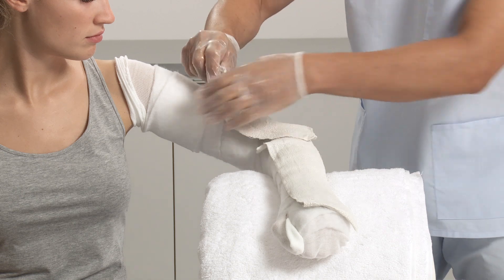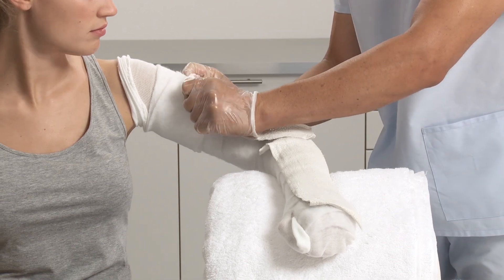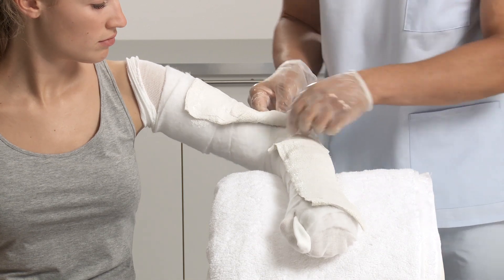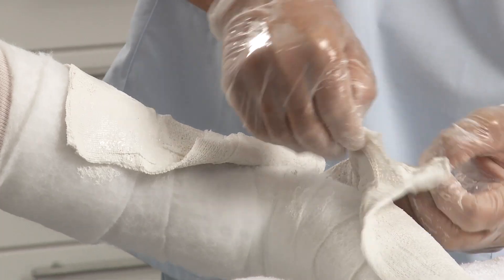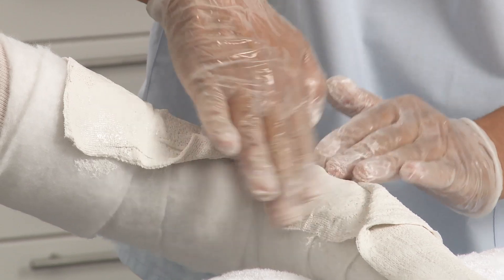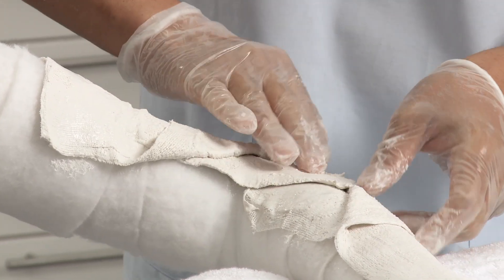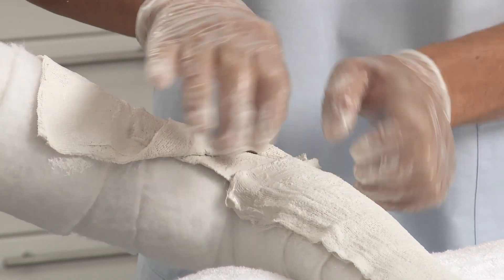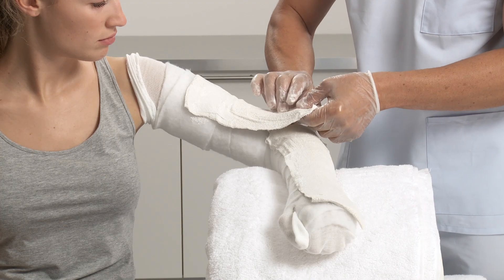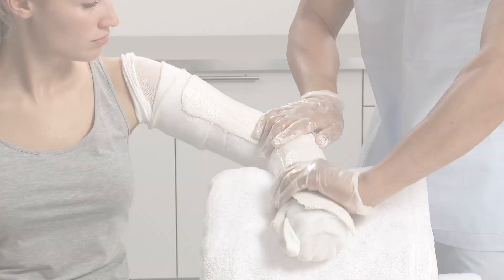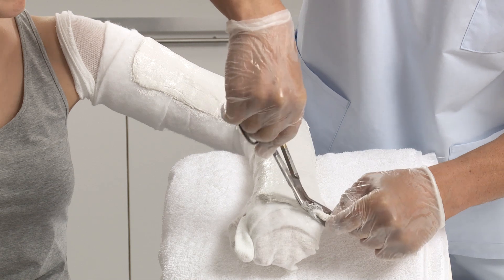Then apply the second splint onto the upper arm, overlapping with the first splint by intertwining the layers. Cut the splint to size.